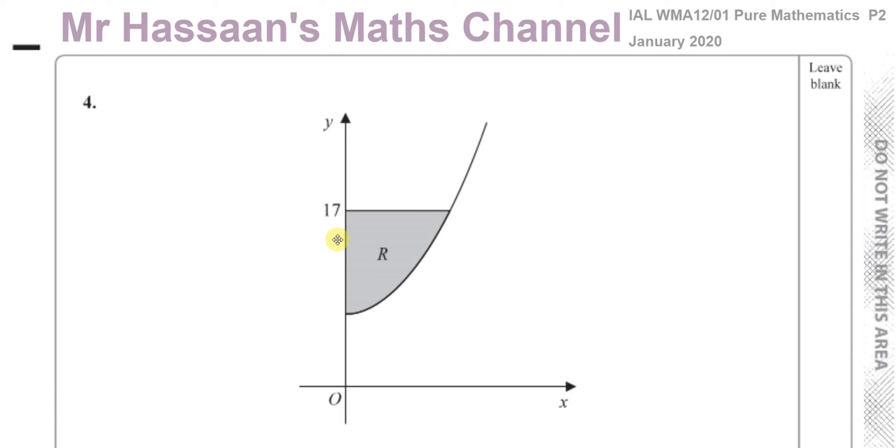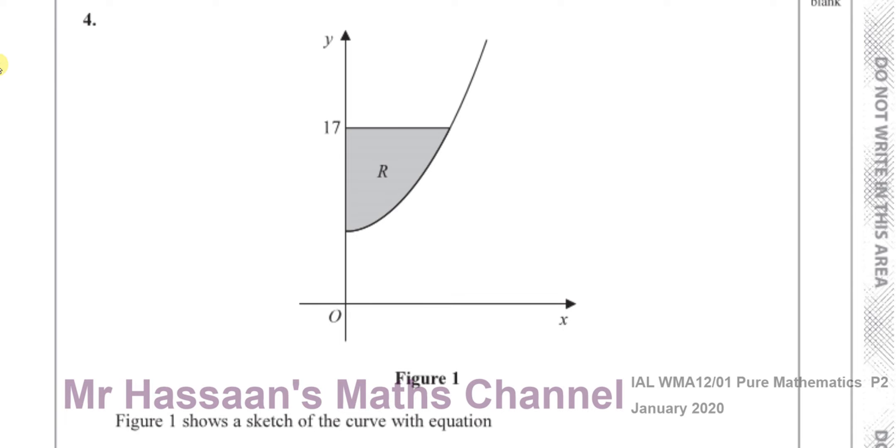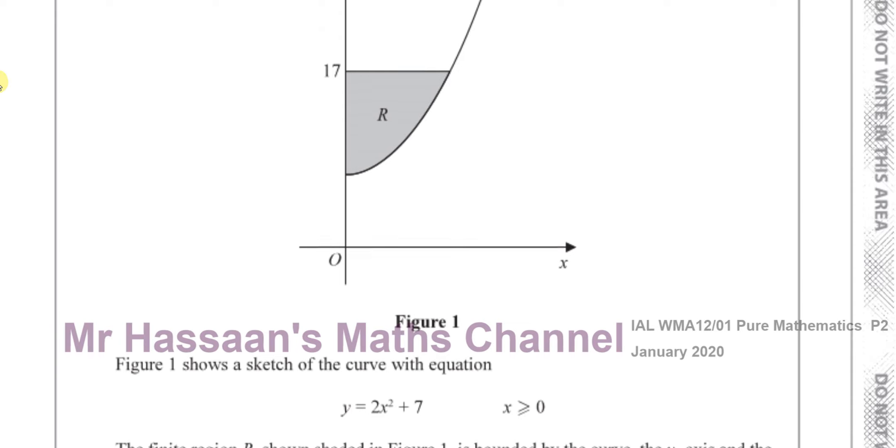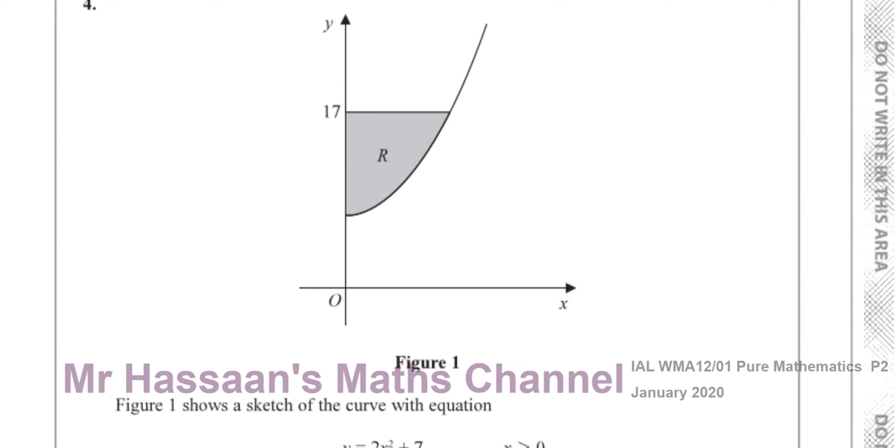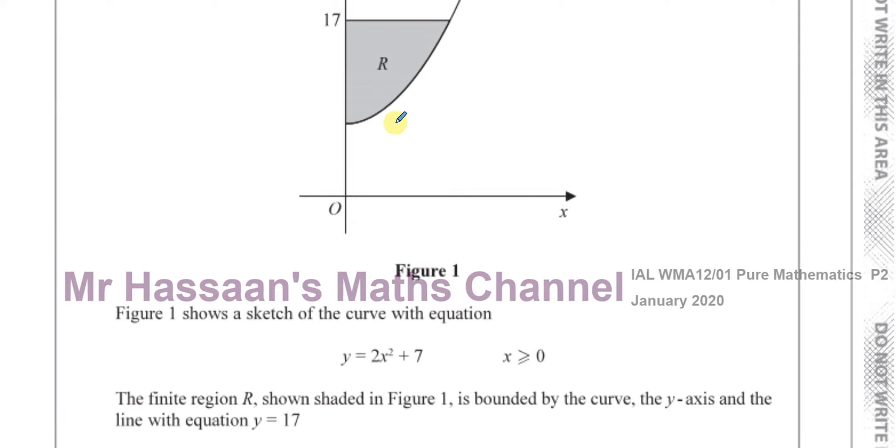Question number 4 gives us this diagram, this graph, and it tells us figure 1 shows the sketch of a curve with the equation y equals 2x squared plus 7. And it tells us the finite region R, shown shaded in figure 1, is bounded by the curve, the y-axis, and the line with equation y equals 17.